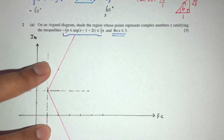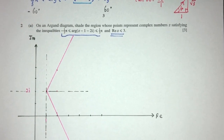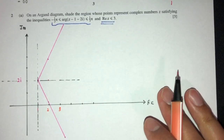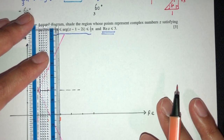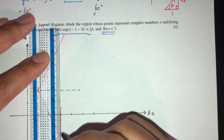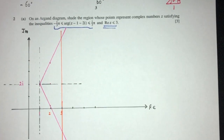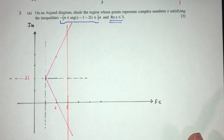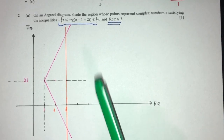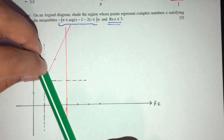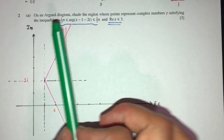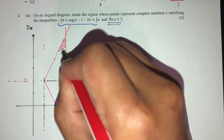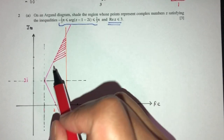This is your answer for the first part. For the second inequality — Re(z) ≤ 3 — we just have a vertical line at x = 3. Combining both: the argument has to be between the two lines from (1, 2), and we are on the left side of x = 3. Shading that region gives the answer for the locus of these two inequalities.